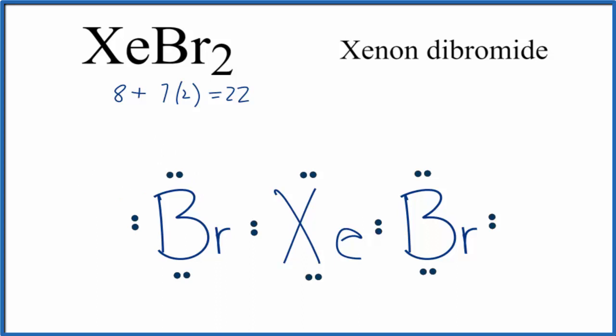Xenon can have an expanded octet, so we could place those extra electrons here on the central xenon, and that would make this the Lewis structure for xenon dibromide. Each bromine has an octet, and then that xenon in the center has an expanded octet, more than 8 valence electrons, but that's okay.